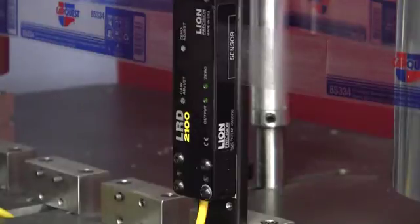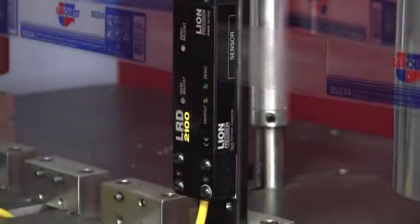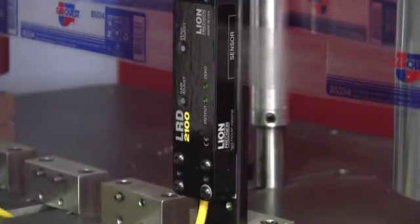Once you've done that you don't ever have to adjust that zero adjustment again unless you put it on a different machine. For that reason we ship these black dots with the sensors and you can peel one of those off and place it over the zero adjust so everyone knows they don't have to adjust that anymore.